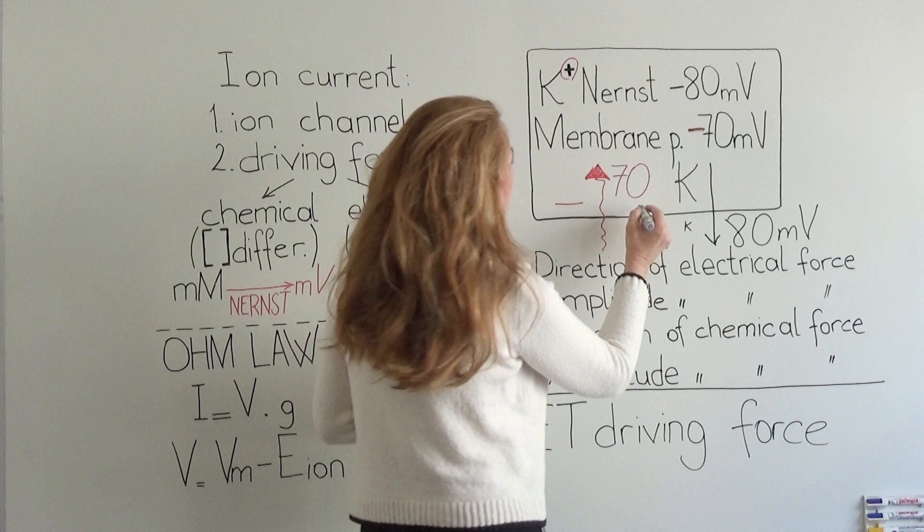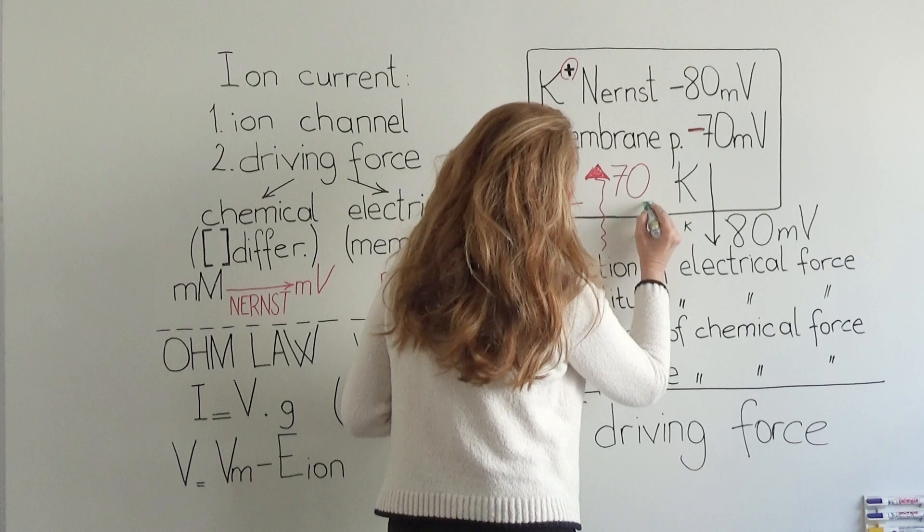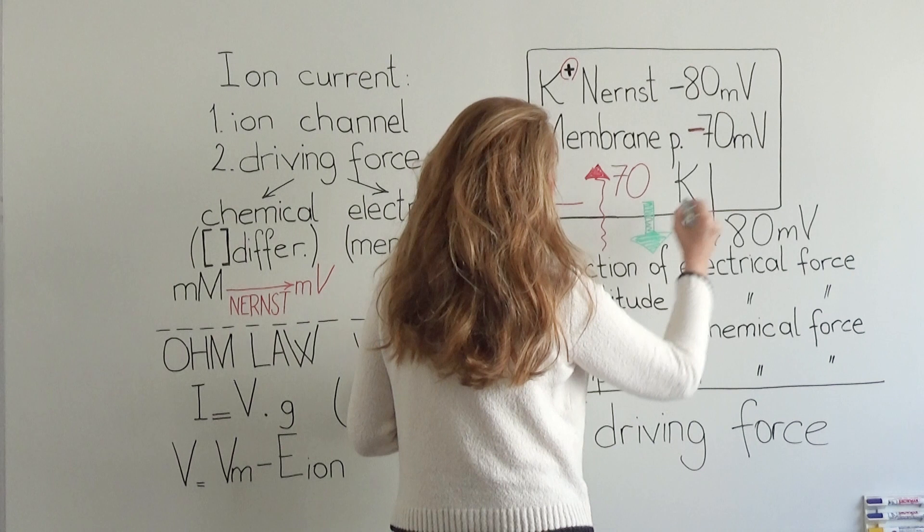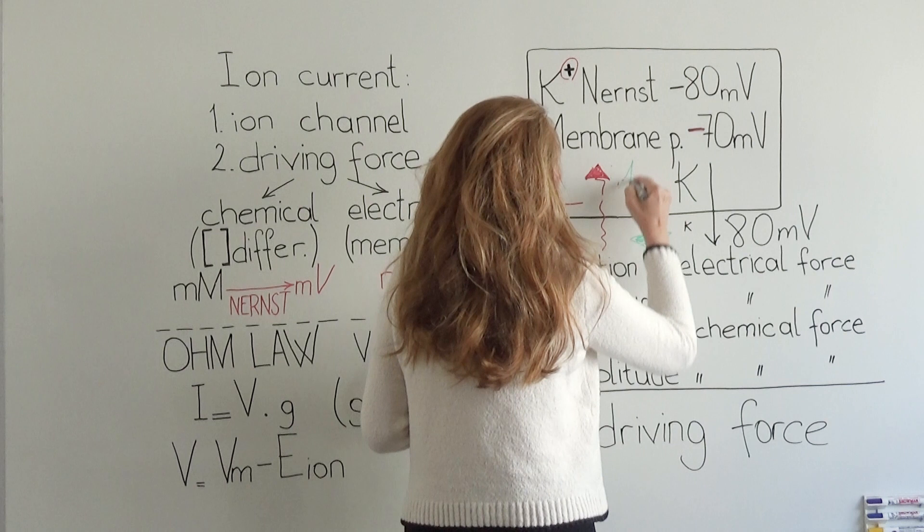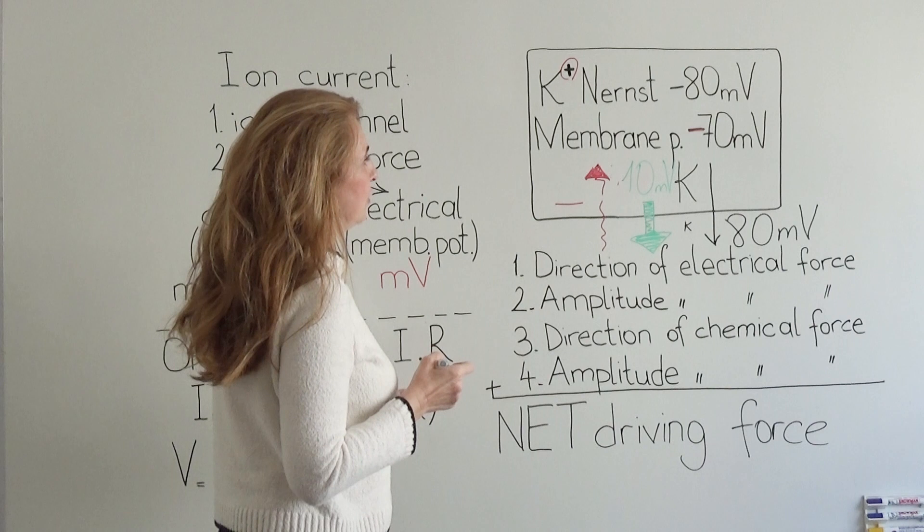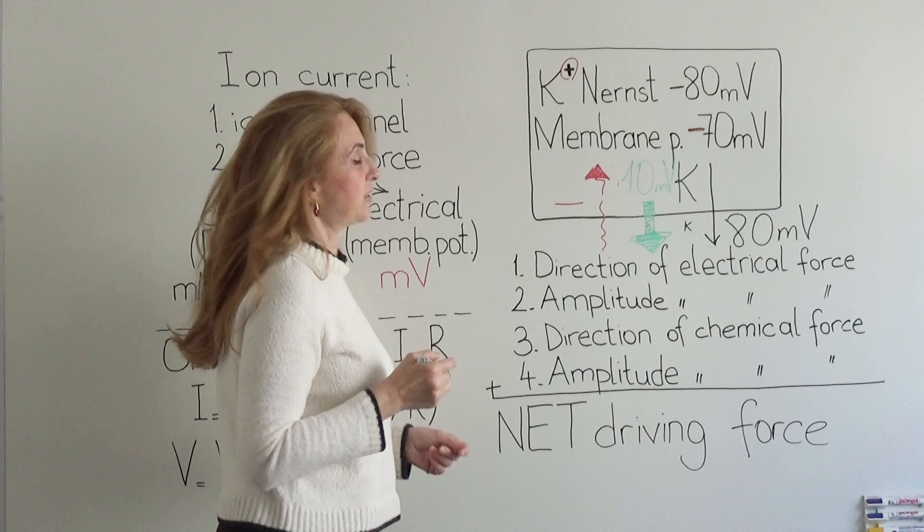What is the net force? Net force is 10 millivolts of electrochemical force pushing potassium out of the cell. This is our net driving force. So the result is that we are going to have a potassium efflux.